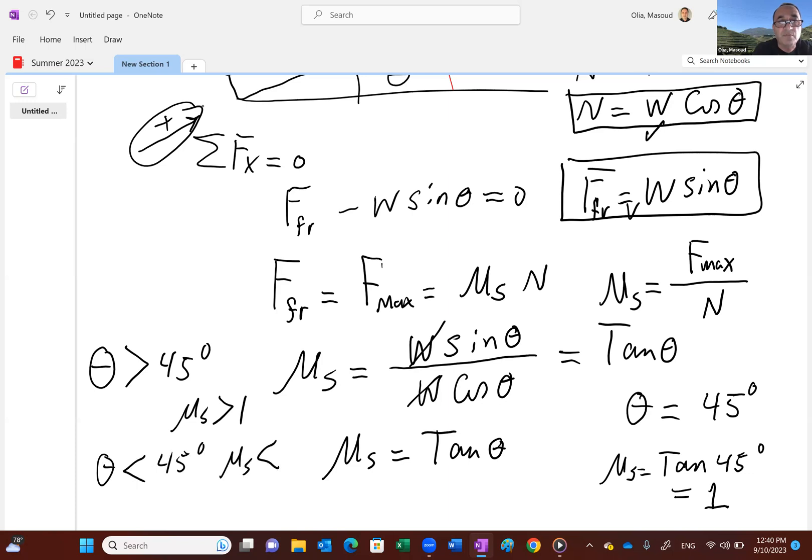Now, coefficient of static friction, you do have a table. It's experimentally calculated and tabulated. You can go to the table and figure out the coefficient of friction between two surfaces. Of course, for coefficient of kinetic friction, you have to do more experiments with motion. Kinetic friction is when the motion happens. Static friction is when the motion is about to happen.